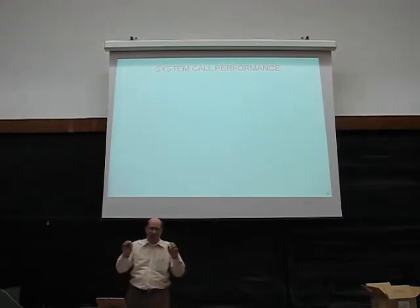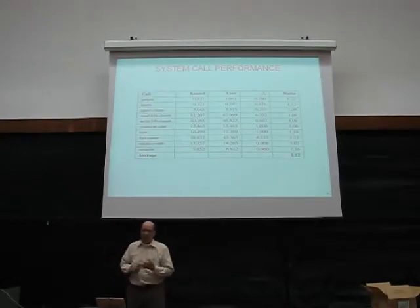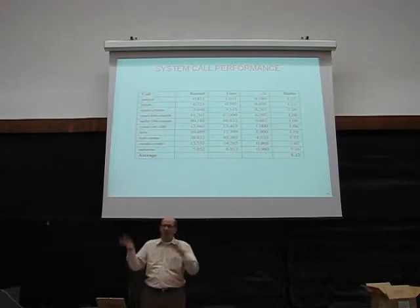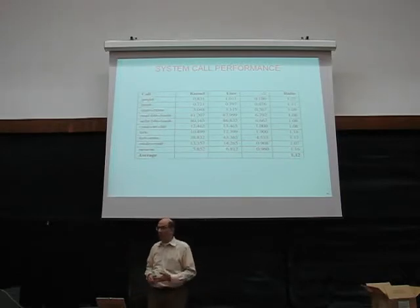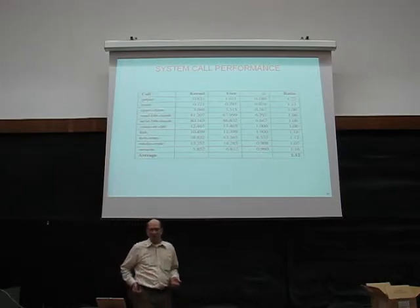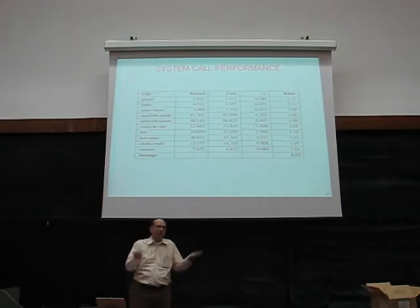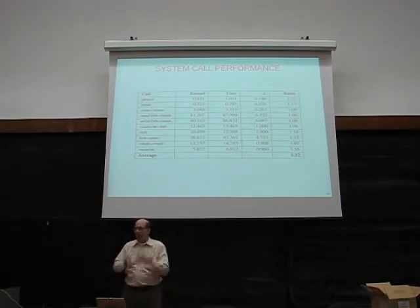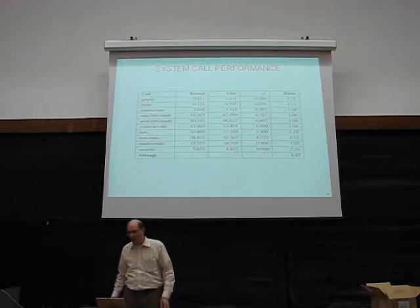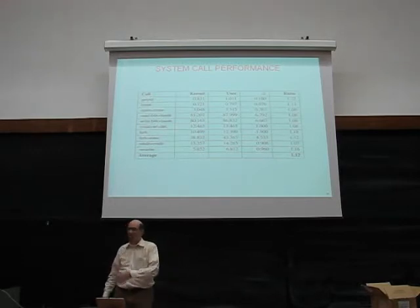Nevertheless, we did measure the system's performance. We measured Minix 3 against Minix 2, which is the same system but with drivers in the kernel and much less checking. getpid is 22% slower, mostly because of a little more checking — bitmaps and all that stuff. getpid doesn't read one word out of the kernel, so all you see is overhead. But for other calls like ls, it's only about 11% slower. On average, it's maybe a 12% hit, mostly due to the checking.